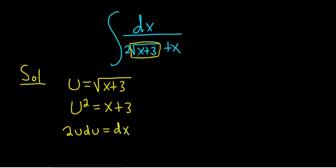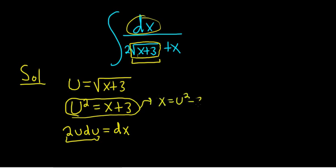We're almost there. So we've taken care of the dx, because that's going to be 2u du. We've taken care of this square root thing. What about the x? Well, we can use this equation here to solve for x. We can just subtract 3 from both sides. So x is equal to u squared minus 3.